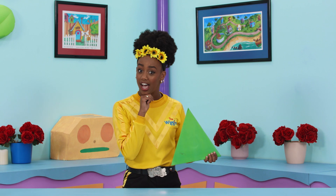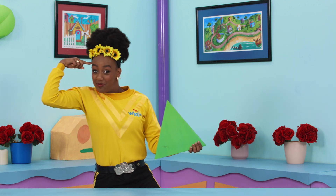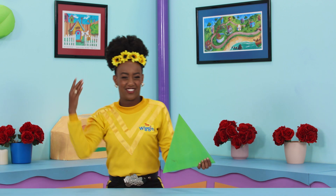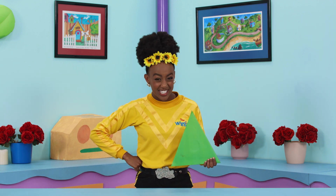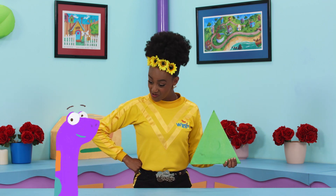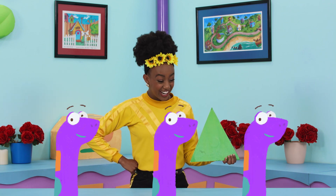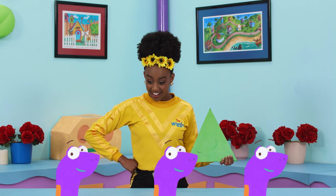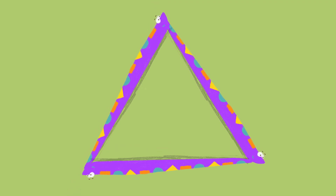Just thinking out loud. If a triangle has three straight sides, that means we need three shape snakes to make a triangle. One, two, three. Great job, shape snakes.